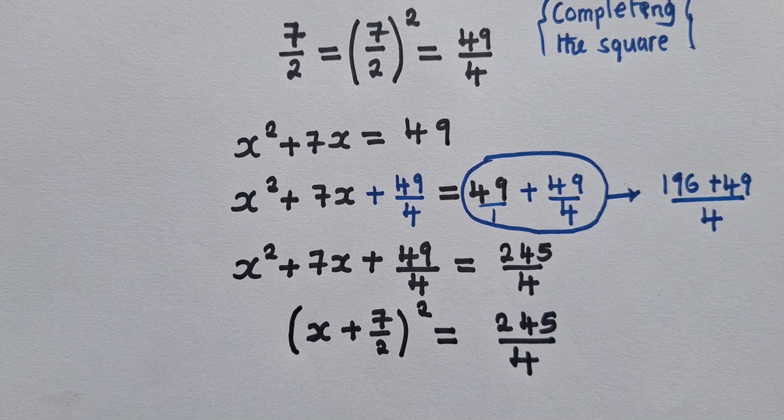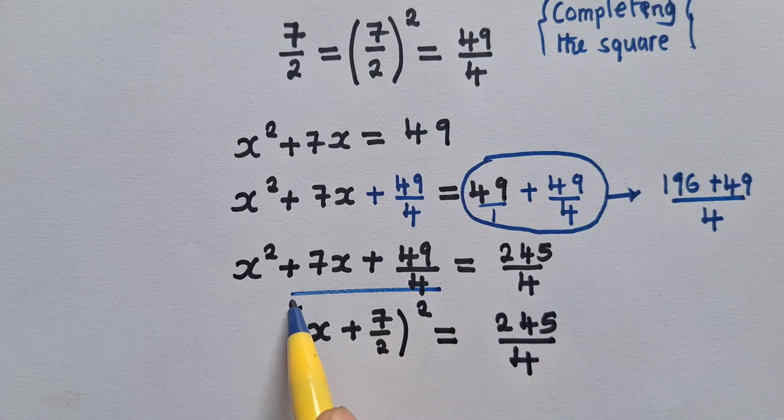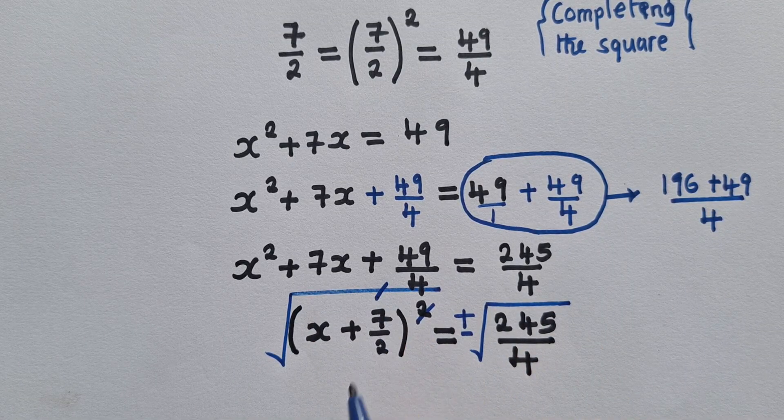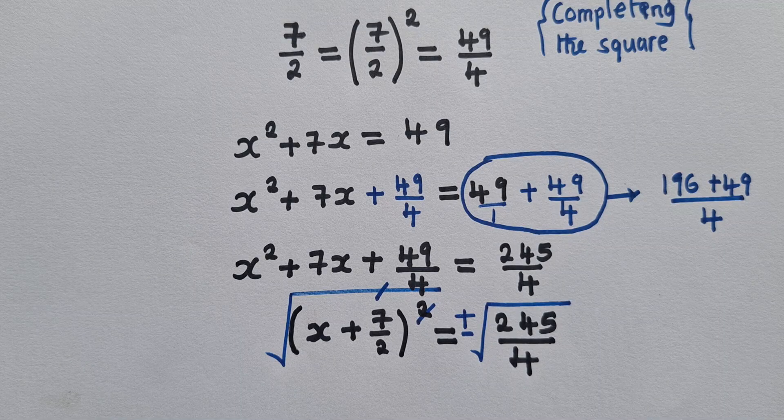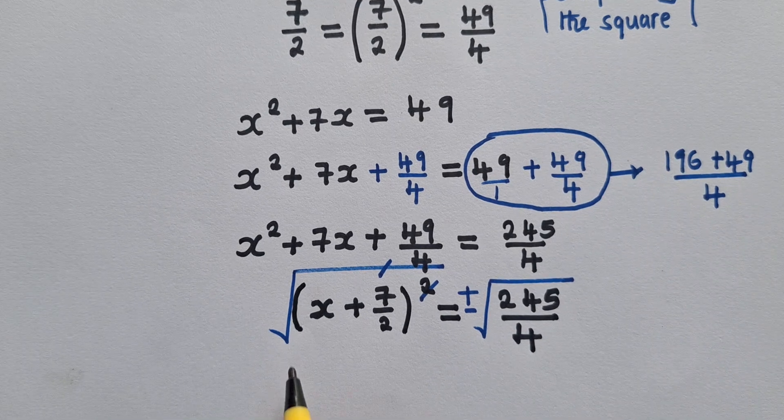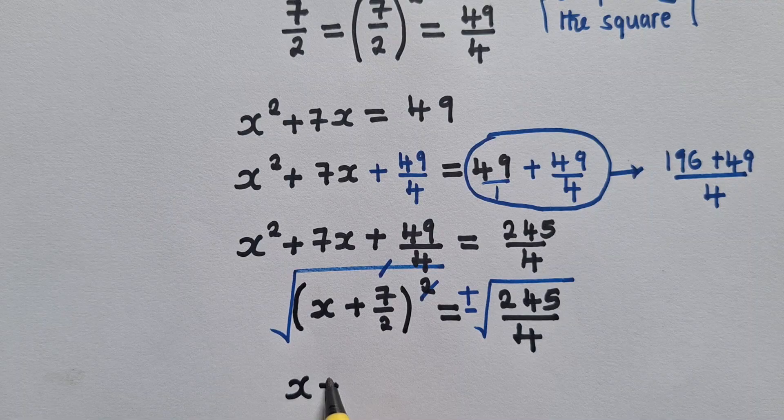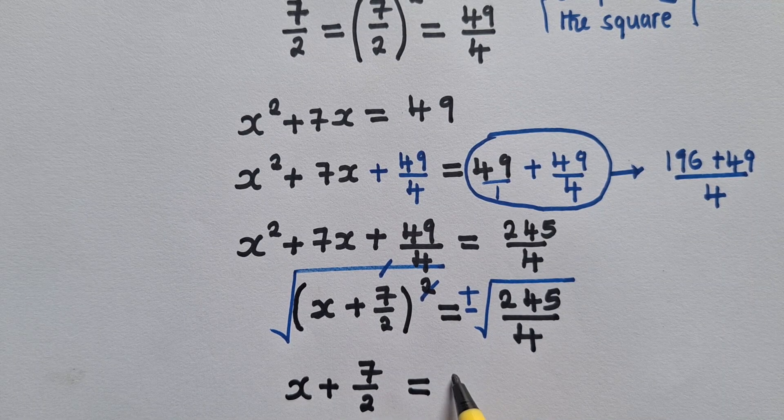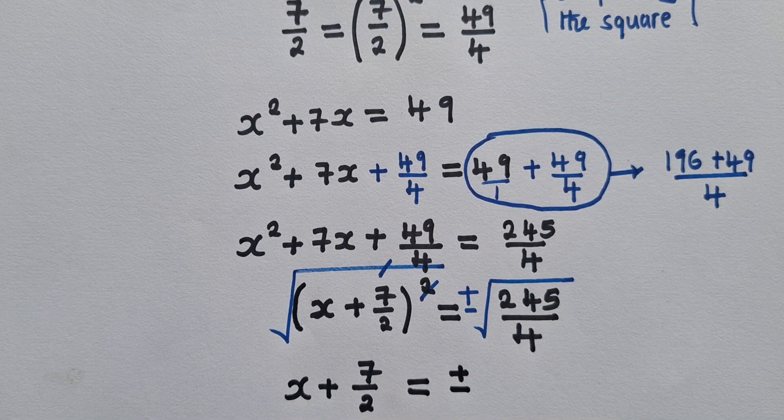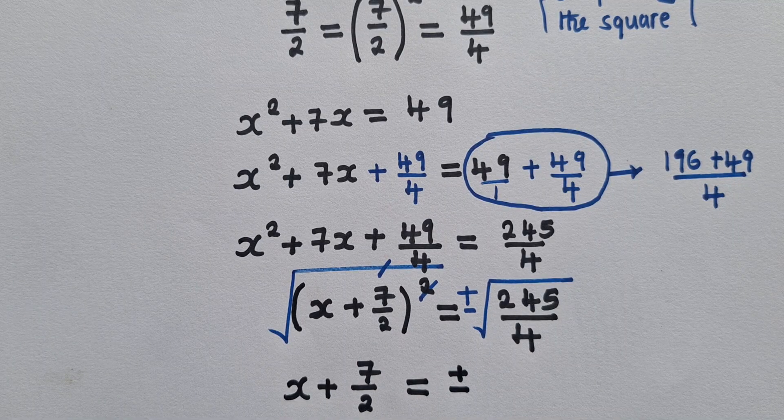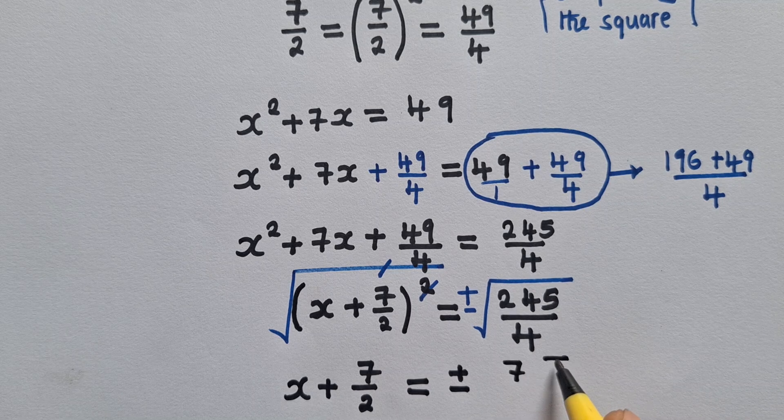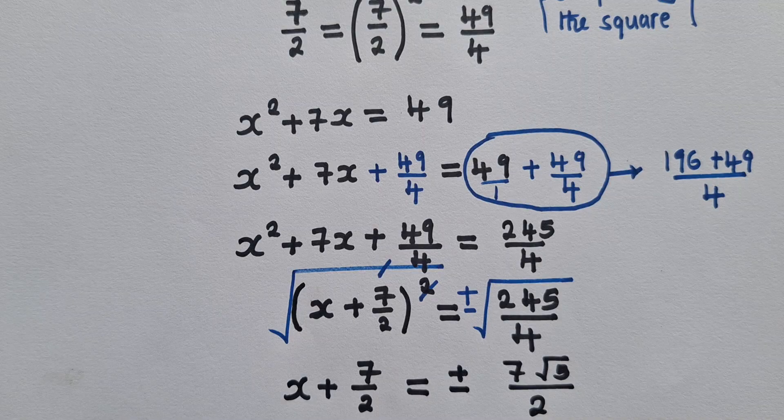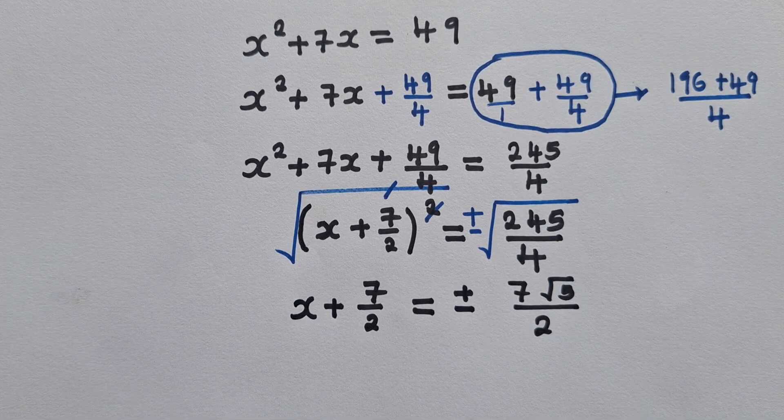And once you do that, you now get rid of the power 2 by introducing the square root on both sides. So this and this will cancel out. We shall remain with x plus 7/2, which is equal to plus or minus. When you find the square root of 245, this will just be 7√5 over 2.